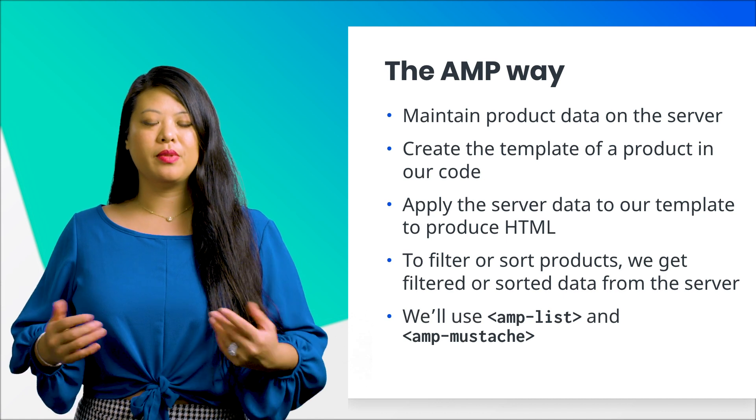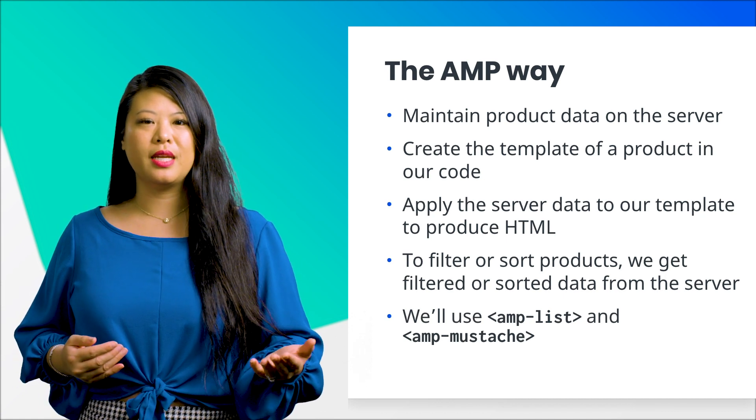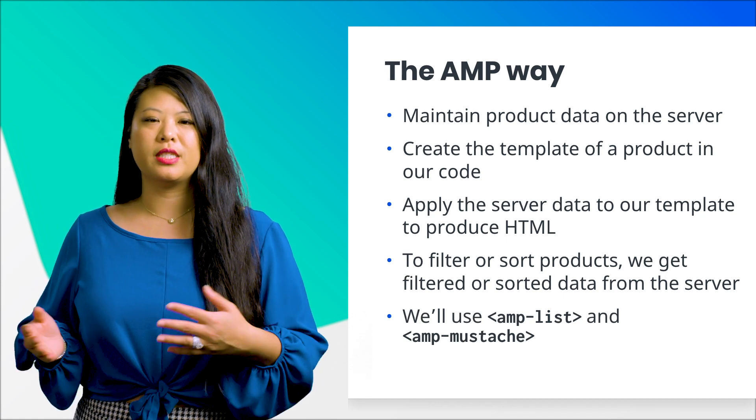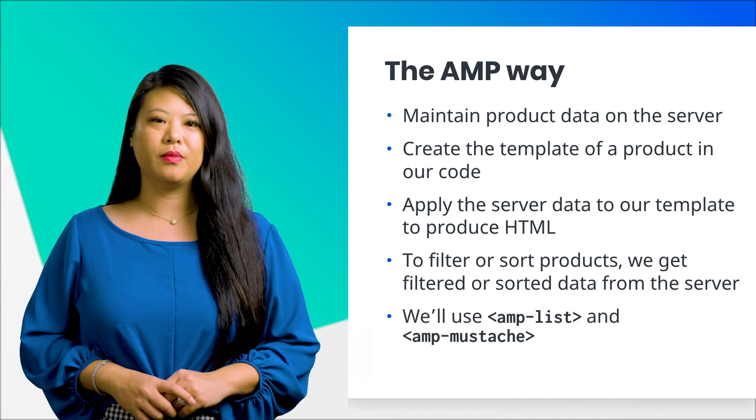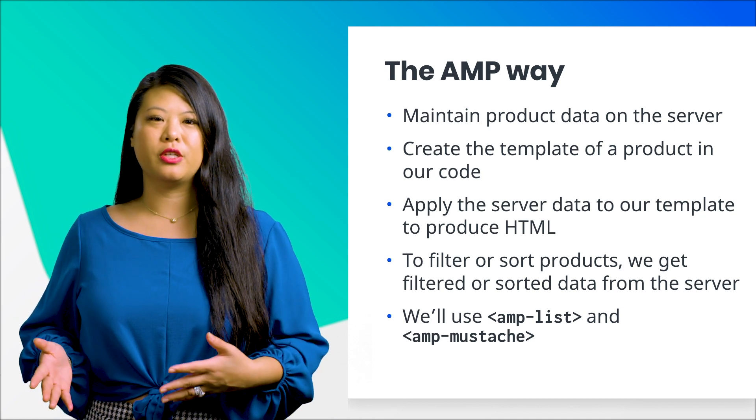In AMP, we use the AMP list component to retrieve data from the server and display it on the screen. We'll also use the AMP mustache templates we first learned about in the intermediate course. Before we dive into how to retrieve server data with AMP, let's take a moment to discuss how servers provide the data we're after.